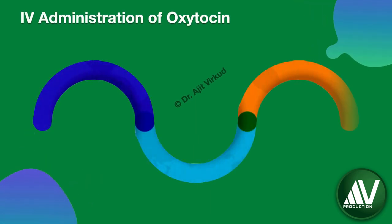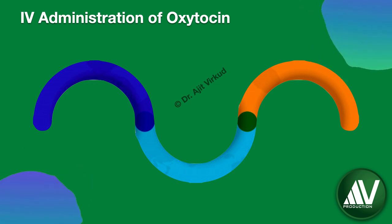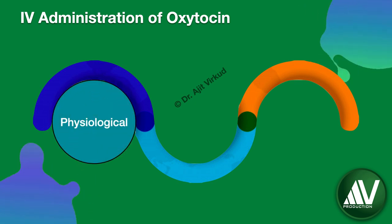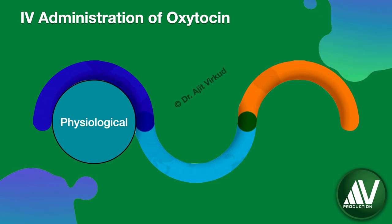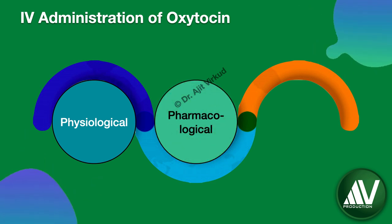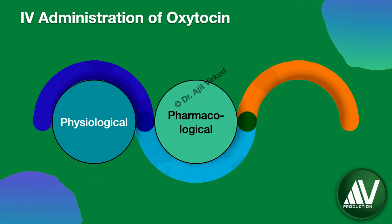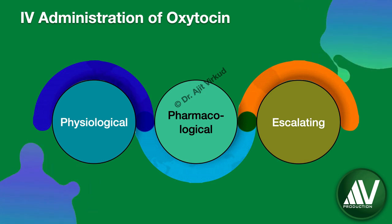Intravenous oxytocin can be given in three ways. When used for induction of labor, it is initially given in low doses and gradually increased until adequate uterine contractions are achieved — this is giving it in physiological doses. When given in high doses such as 10 to 20 units for treatment of atonic postpartum hemorrhage, this is pharmacological dosing. Rarely, for evacuation of vesicular mole, it is given in escalating doses — doubled every drip.